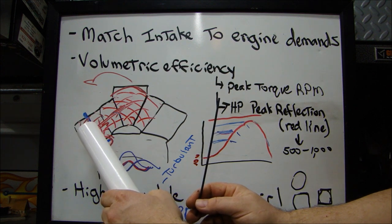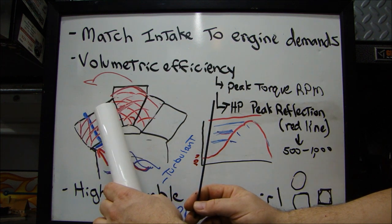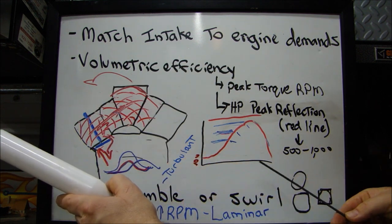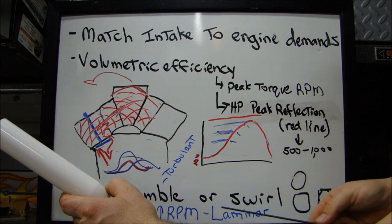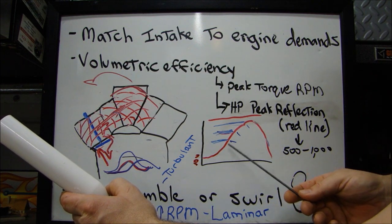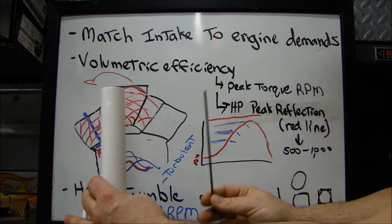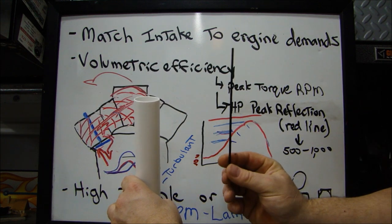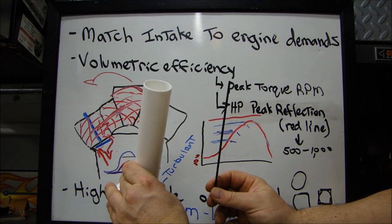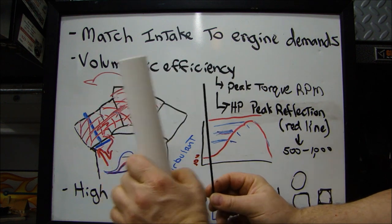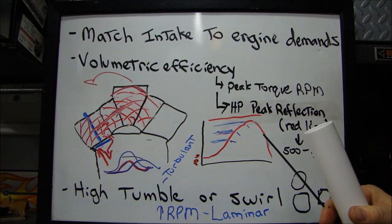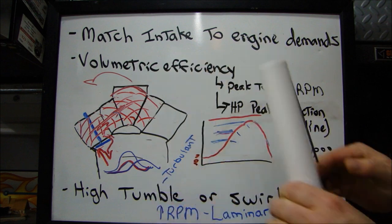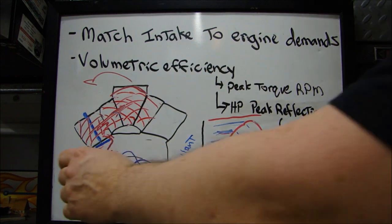So we're talking about pressure waves, the resonance tuning of the manifold, and how that all relates to the plenum and the runners, how that gets into the head. We talked about the swirl, the RPMs, and where you want your peak torque as it relates to peak RPM. When you choose your runner and your intake manifold, do you want velocity or do you want volume? Let's talk about the compromise between plenum volume and plenum velocity.